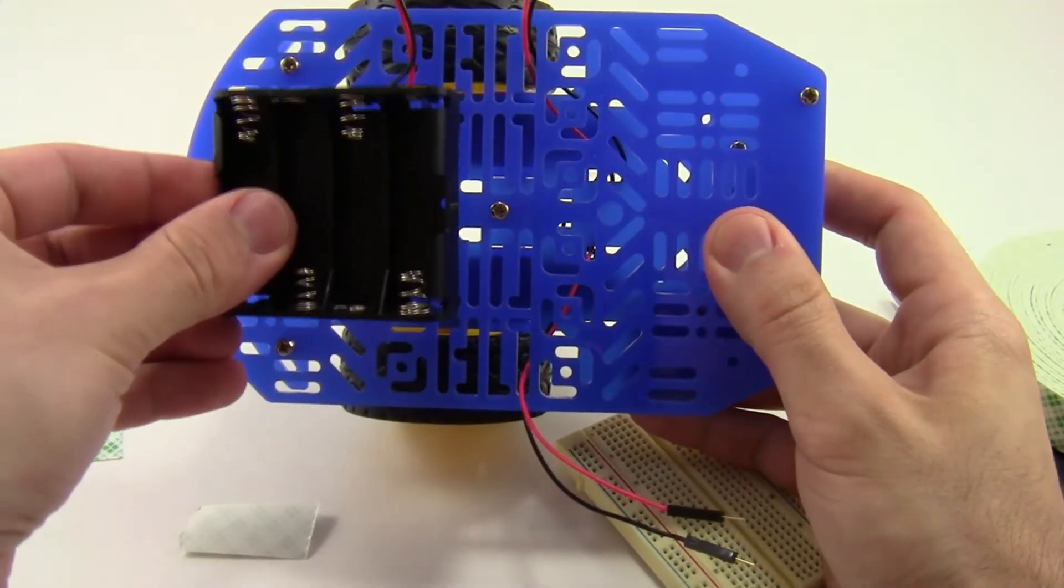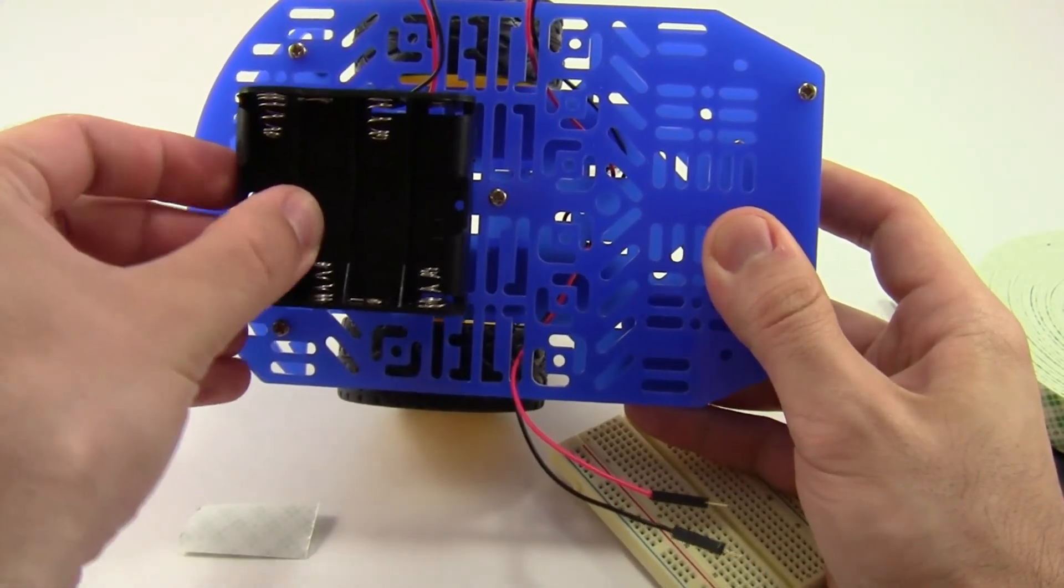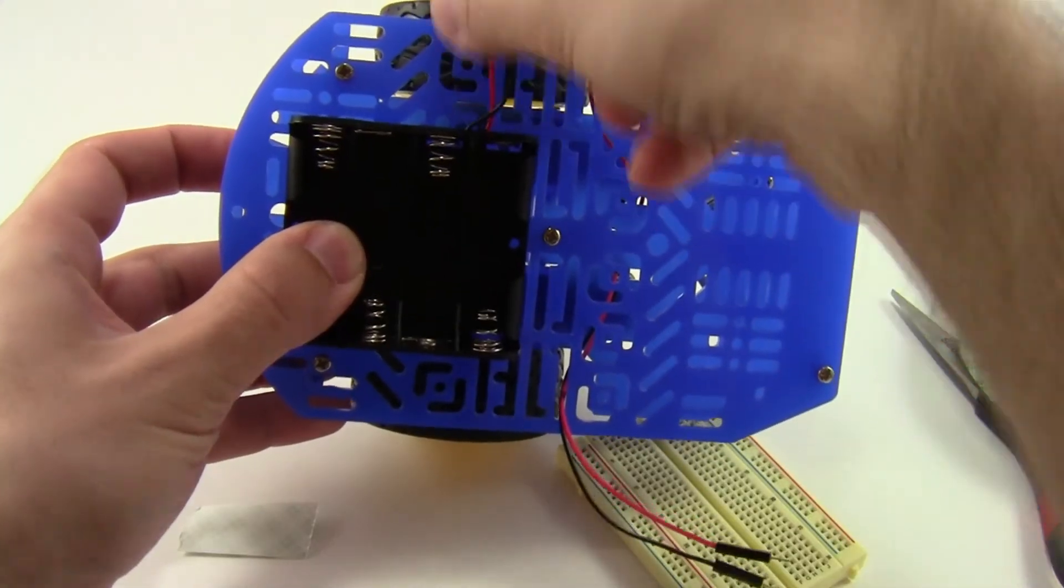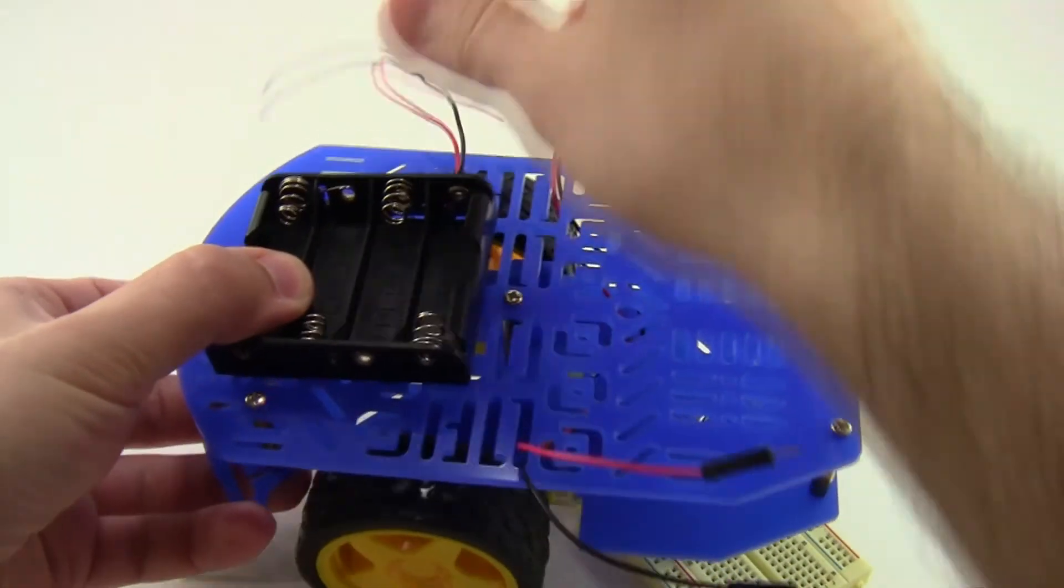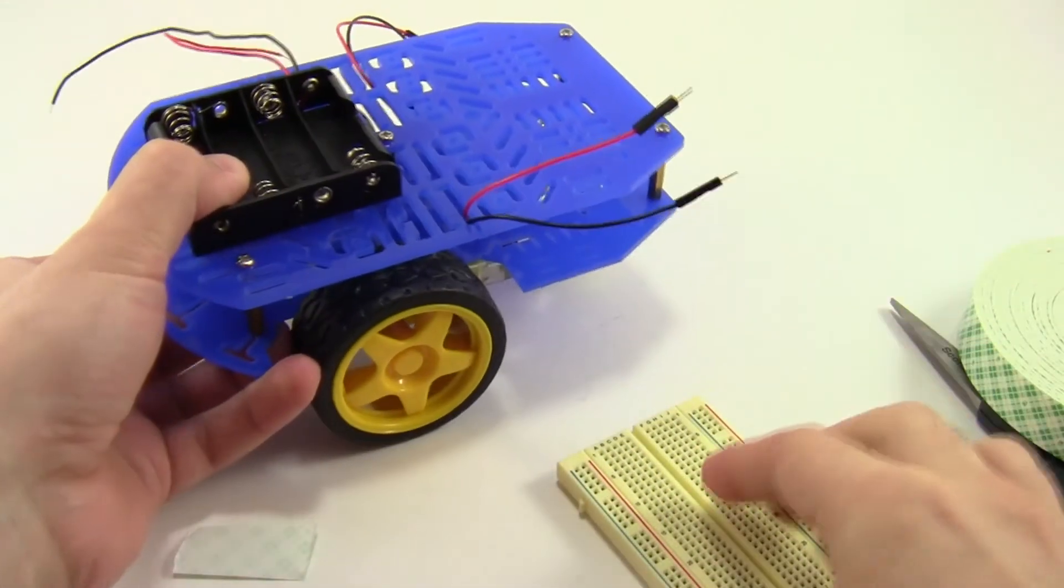Now hold the battery pack so the wires are sticking up. Again, make sure you're holding the chassis with the curved side to the left and just stick the battery pack on the left part of the chassis, as shown here.